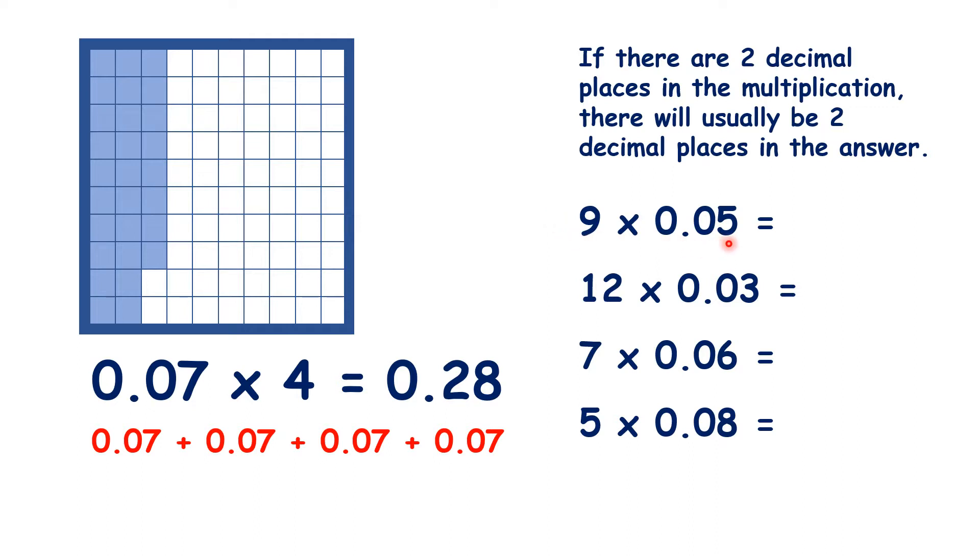Nine times 5 is 45, so 9 times 0.05 is 0.45. 12 times 3 is 36, so 12 times 0.03 is 0.36.